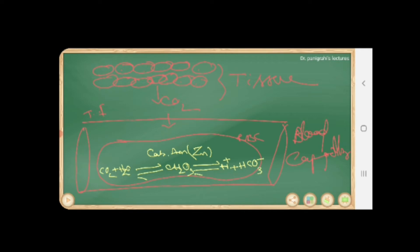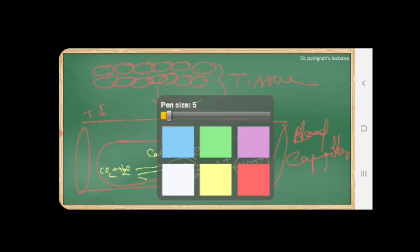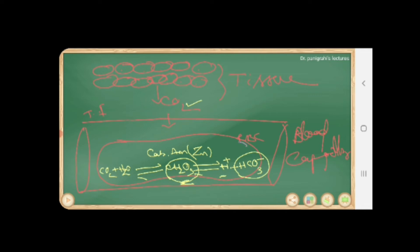This carbonic acid (H2CO3) is unstable and dissociates into H⁺ (hydrogen ions) and bicarbonate ion (HCO3⁻). So the carbon dioxide produced by cellular respiration enters the blood capillary, and due to carbonic anhydrase and zinc, CO2 reacts with water to produce carbonic acid, which then dissociates into H⁺ and HCO3⁻.